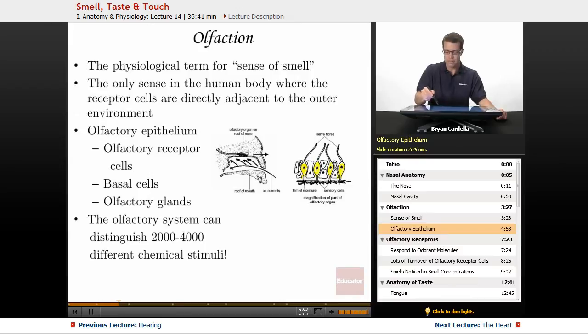Olfactory glands, which aren't depicted very well in this particular picture, are just glands that produce the mucus. So that mucus layer that's right in here that these cilia are actually embedded in, that's where the mucus comes from. A little bit different than the glands within the skin, they're producing mucus that's located in the nasal conchae.